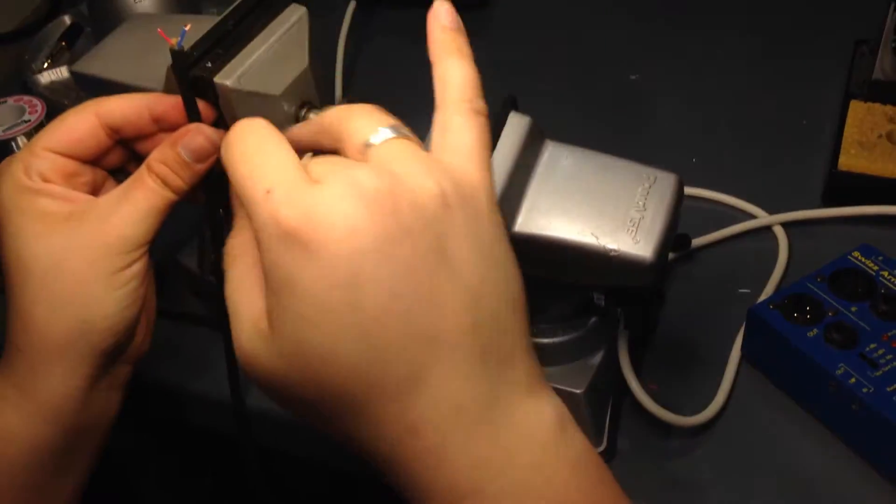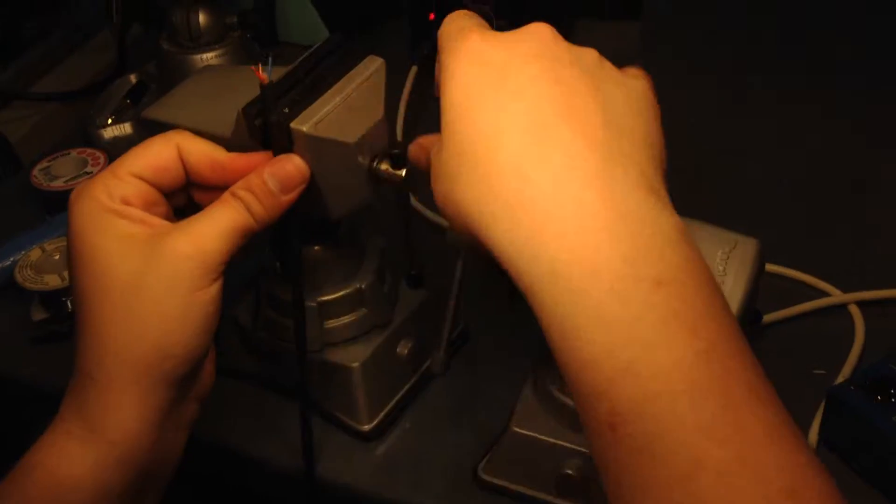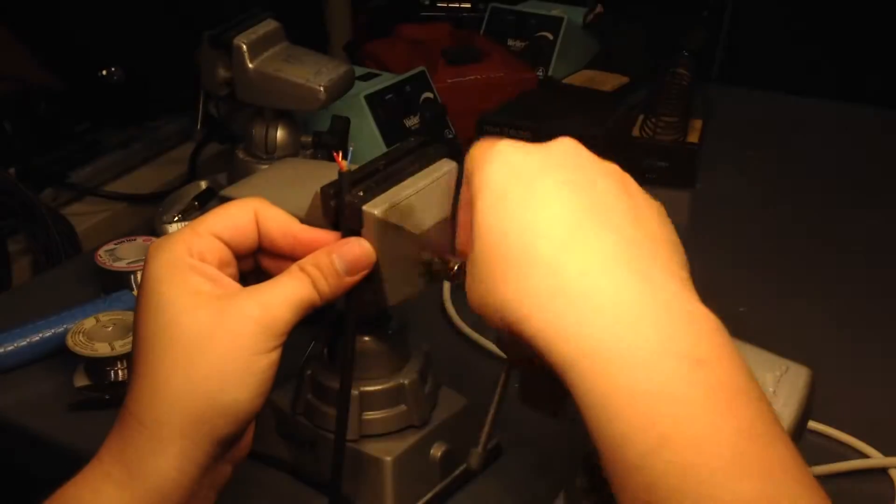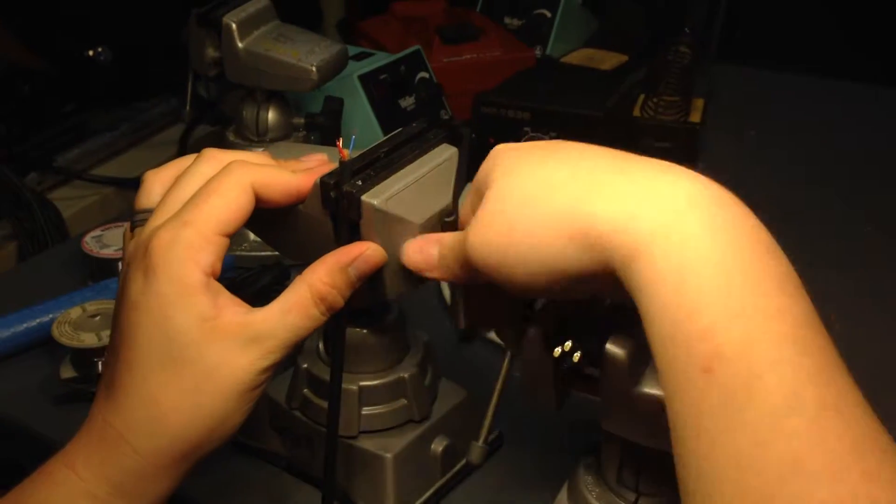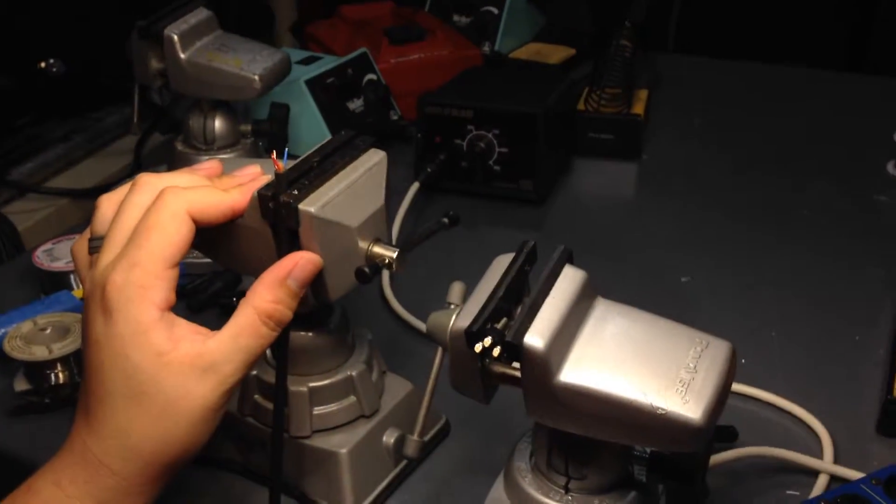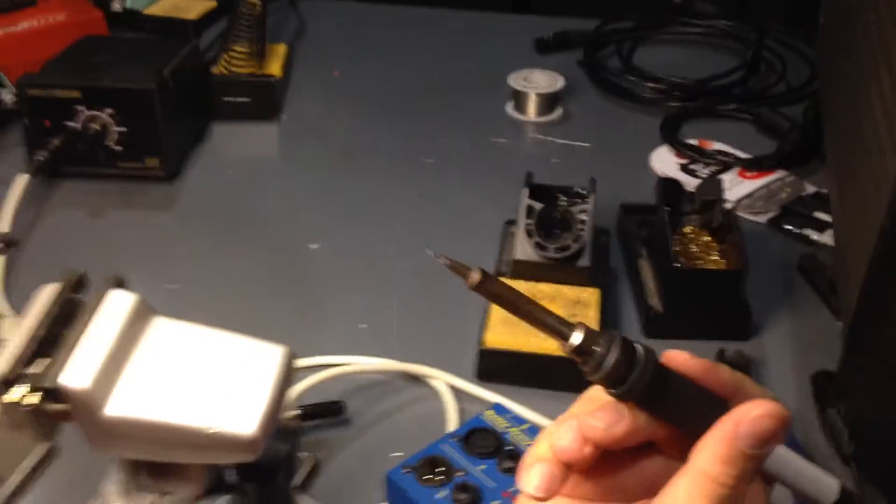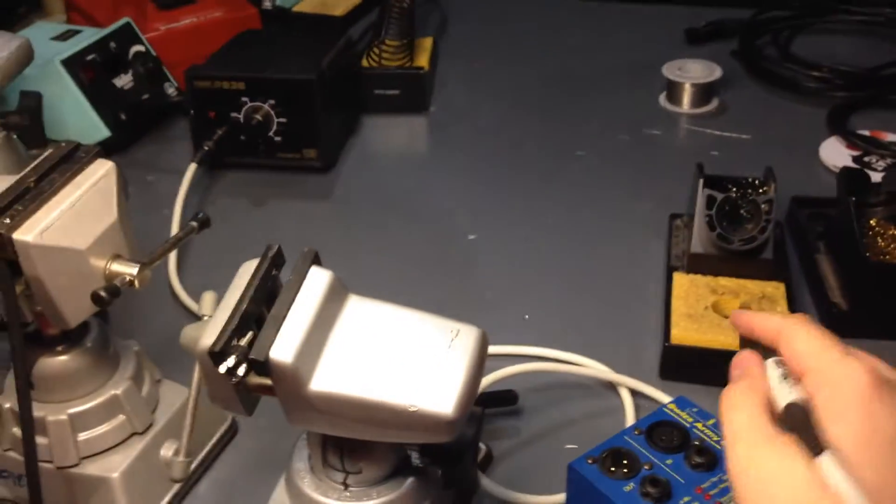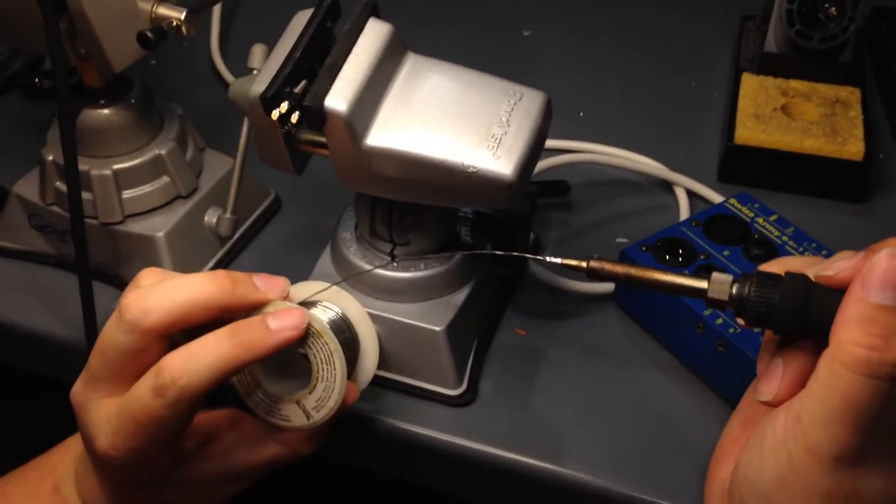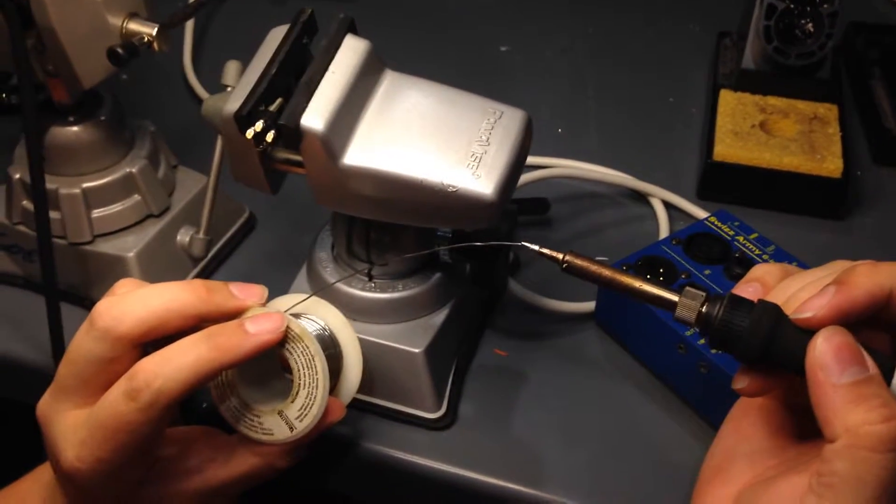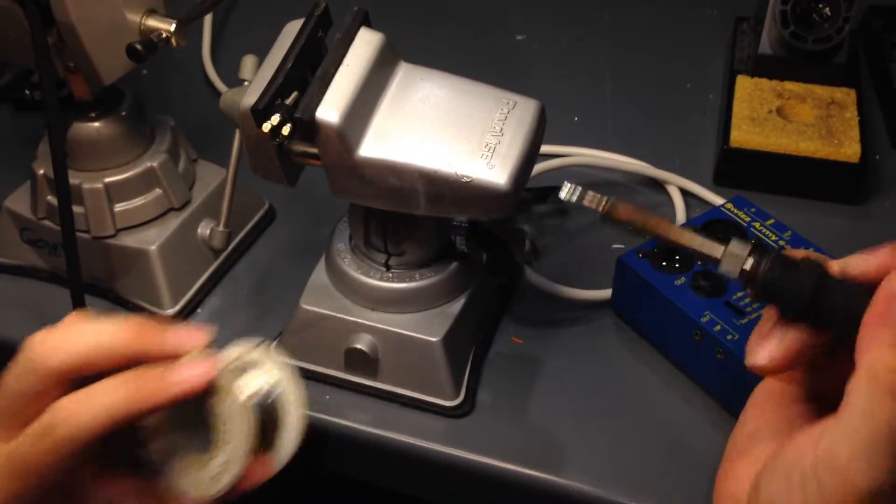And then what I'm going to do is prep this side of the cable here. And on the soldering iron, what you want to do is go ahead and make sure that the tip is clean. Just a little bit on the sponge. Make sure it's got water. It's wet. And you just want to tin it a little bit so it helps to conduct the heat. Put a little bit of solder on the end of it.